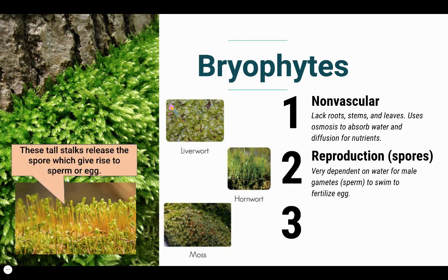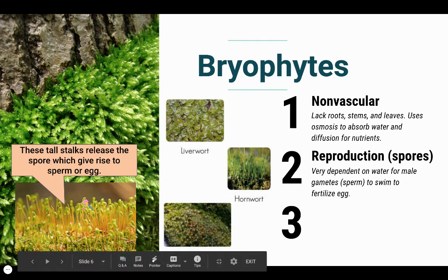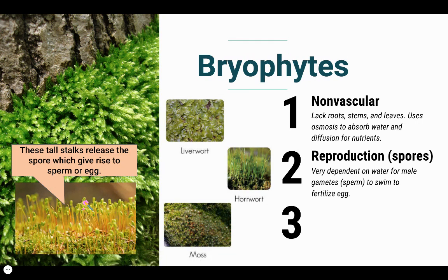With bryophytes, we're going to use moss as an example. In this picture you can see moss and these tall stalks rising above. These contain spores which release and give rise to the next generation, which is sperm or egg. The sperm that's released have flagella and are very dependent on water in order to swim and fertilize a bryophyte egg. If they are not successful, then the next generation doesn't happen.